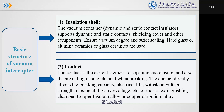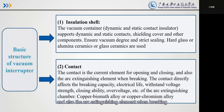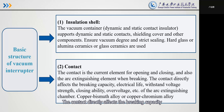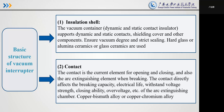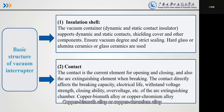(2) Contact: The contact is the current-carrying element for opening and closing and also the arc-extinguishing element when breaking. The contact directly affects the breaking capacity, electrical life, withstand voltage strength, closing ability, overvoltage, and so on of the arc-extinguishing chamber. Contact materials include copper-bismuth alloy or copper-chromium alloy.